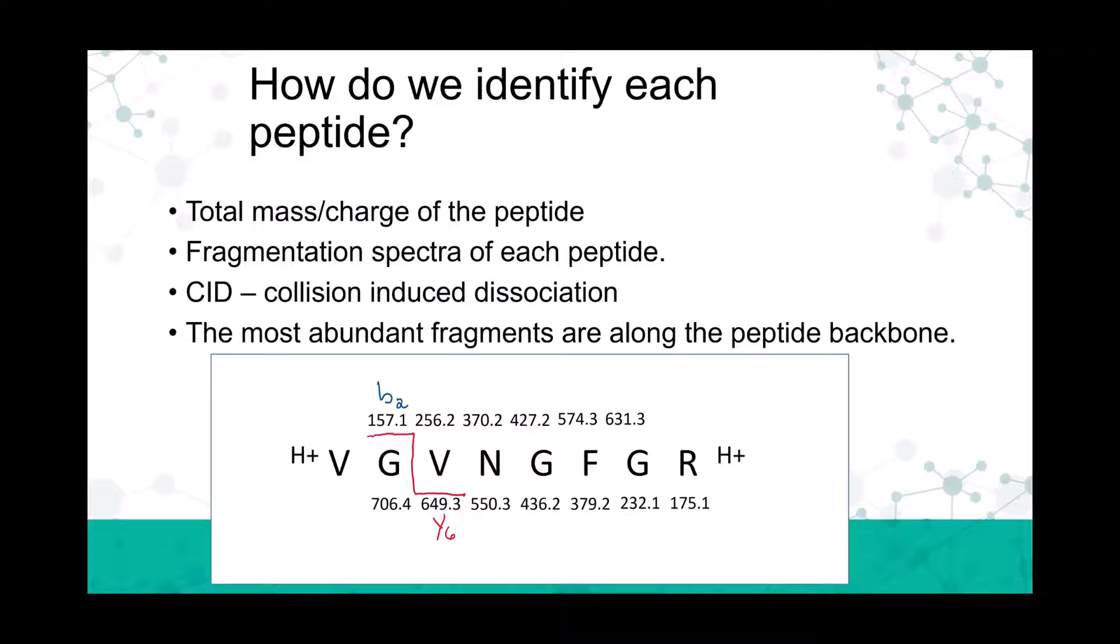How do we identify each peptide? We get a couple of different pieces of information: number one, the total mass-to-charge of the peptide, and also we can get fragmentation spectra of each of those peptides. We do that by using what's called collision-induced dissociation. Basically, you can take a peptide and hit it with some energy—that's done in various ways, like hitting it with some energetic gas. Given the right amount of energy, it causes the peptide to fragment in a way that's very reproducible. The most abundant fragments fragment along the peptide backbone.